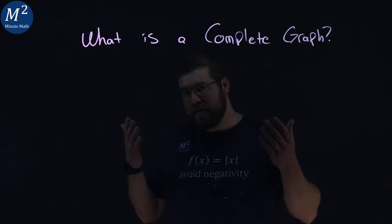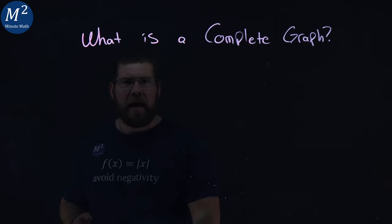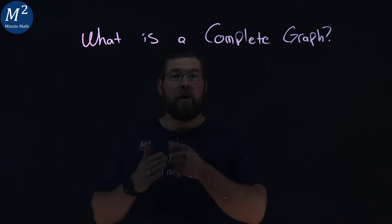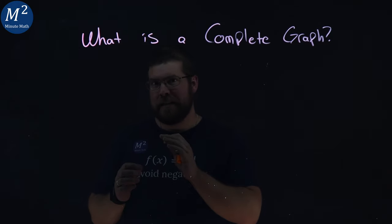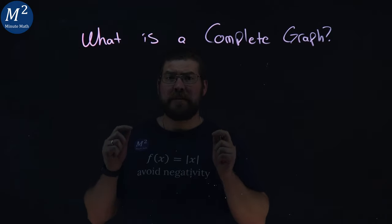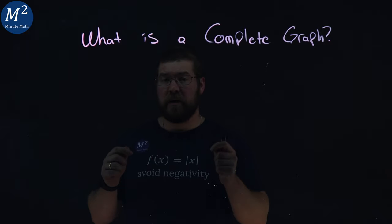What is a complete graph? A complete graph is where every single vertex is connected to every other vertex with a single path.